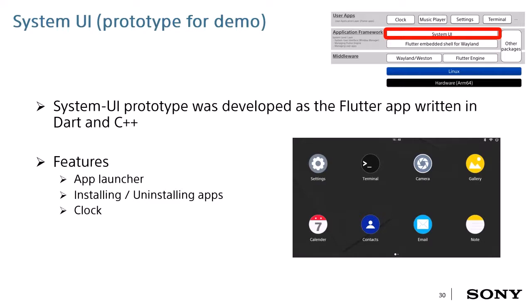System UI is the Flutter app written in Dart and C++. It's currently only for demo, so it doesn't have enough functionality yet. The features are application launcher, installing or uninstalling user apps, and a clock. So you can easily create a UI like this using Flutter.